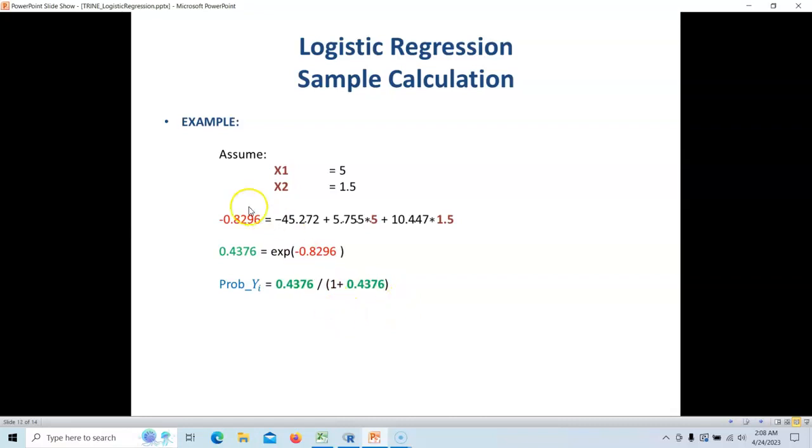So, now, if we do this, we put this guy in here, and we put this guy in here. So, we're going to say 0.4376 divided by 1 plus this. And when we do that, we end up with 0.304. And what does that mean? It means that the probability, given this mathematical formula and these inputs, the probability that something is going to occur will be 30.4%.